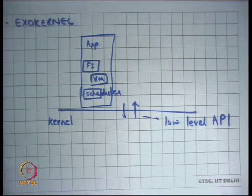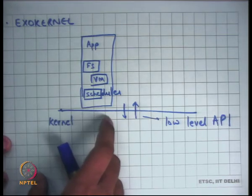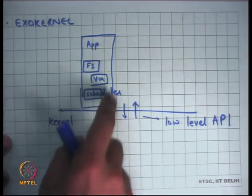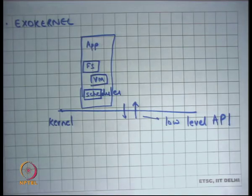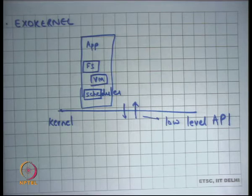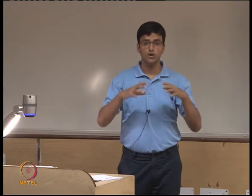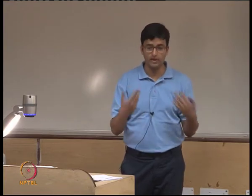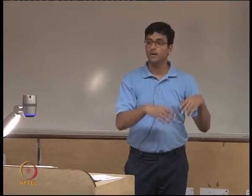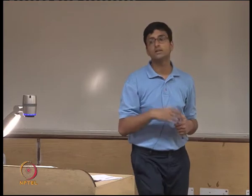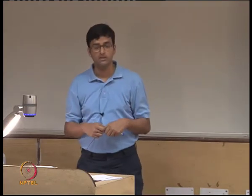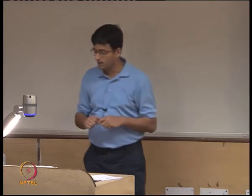Then we were looking at another type called the exokernel. Here the idea is that you expose as much low-level information as possible from the kernel to the application. All the different subsystems like the file system, virtual memory scheduler, even the drivers are part of the application logic. For example, the application knows that there is a physical address space and a virtual address space, and it can decide what the footprint of its code should be on the physical address space, what it should be in the virtual address space, what the mapping should be — in other words, what the replacement algorithm should be and when to take a page fault.